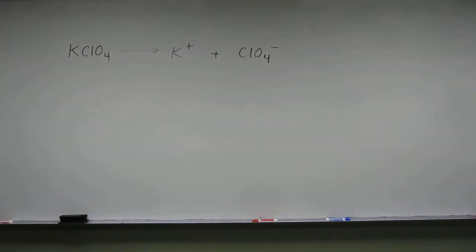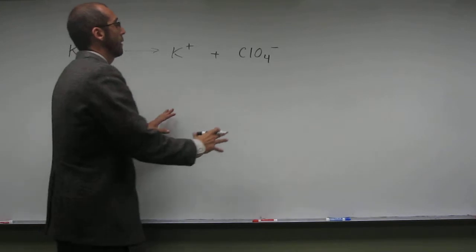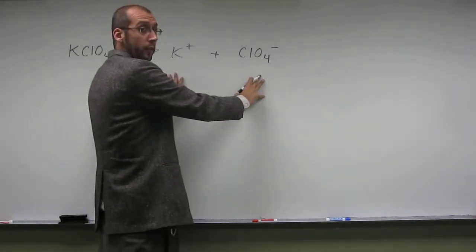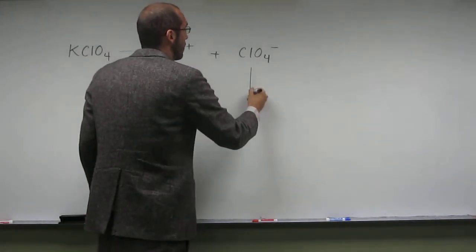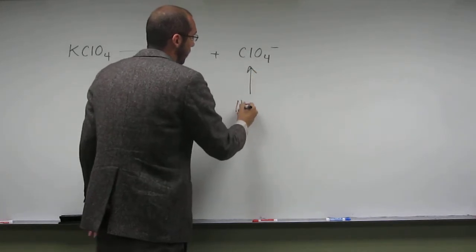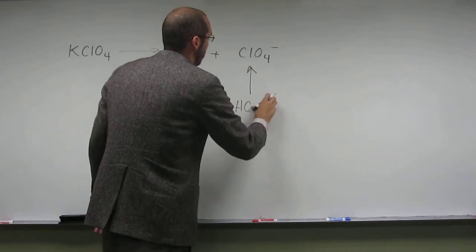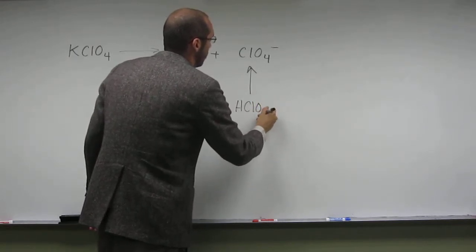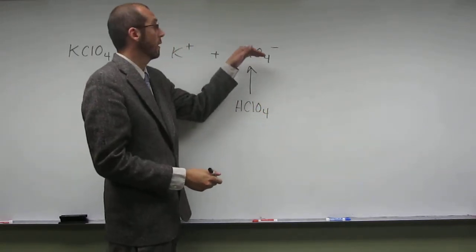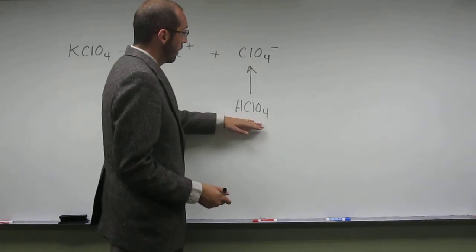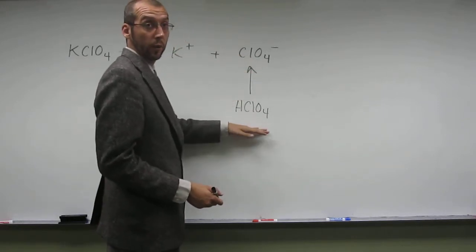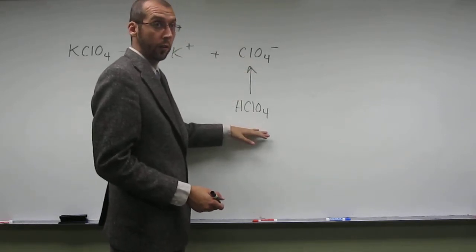When we're looking at the reactions of these things, how did we get to these? Well, this must have come from HClO₄, right? So that's the conjugate base of perchloric acid, which is a strong acid.